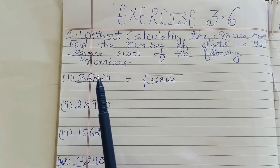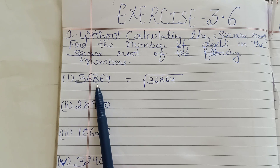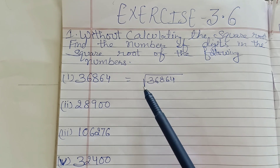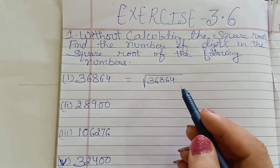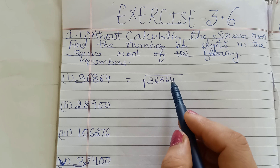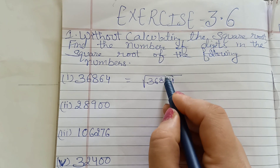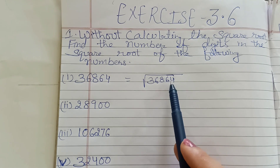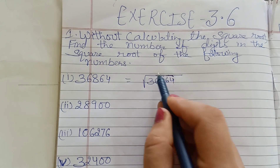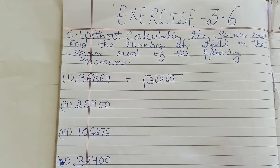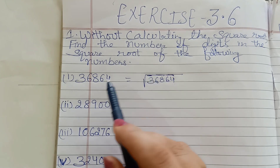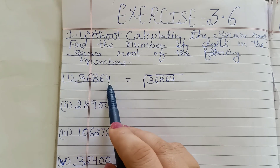So, if we want to find how many digits the square root of 36864 will have, we use the pairing method. We will start its pairing from the right side — square root me pairing hota hai. We put a bar over every two digits starting from the right. So we get one bar, two bar, and three bar. Last mein jitnay reh jayenge, us peh bhi bar lagana hai. So 36864 has three bars, which means its square root will have three digits.